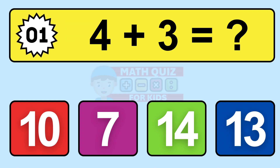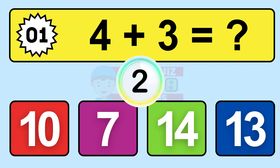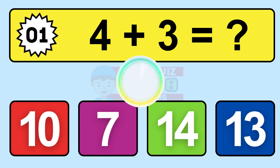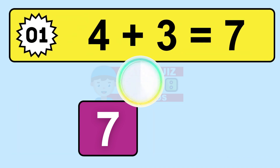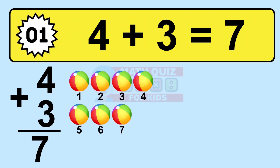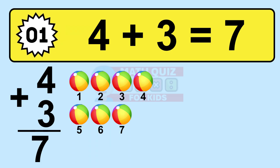Question one: four plus three equals what? So the answer is four plus three is seven. Let's count it. One, two, three, four, five, six, seven.